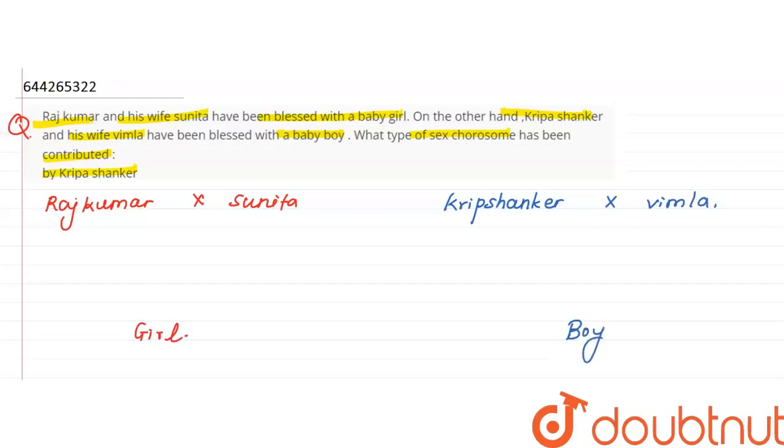Now, if we talk about sex chromosomes, male is heterozygous X, Y, and Vimla and Sunita are homozygous female, then X, X. So this is male, female, male, female.